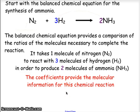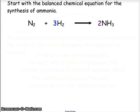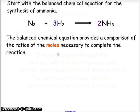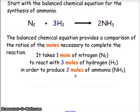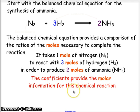The coefficients provide the molecular information for this reaction. We can also look at the same balanced chemical equation for the ratios of moles: it takes one mole of nitrogen to react with three moles of hydrogen to produce two moles of ammonia. In this case the coefficients provide the molar information for this chemical reaction.